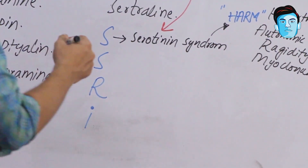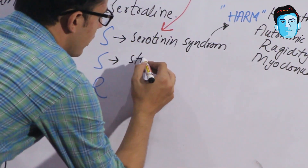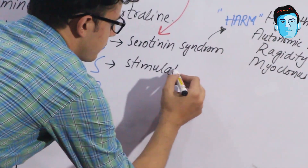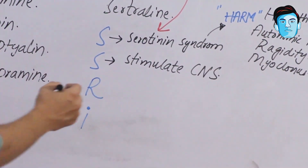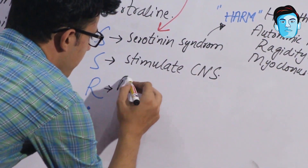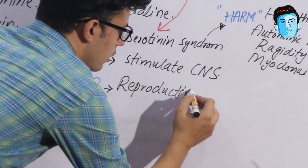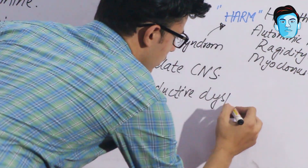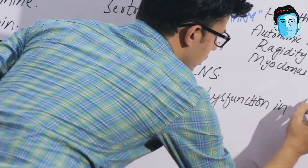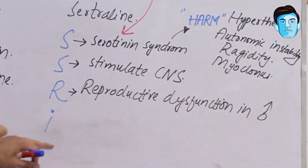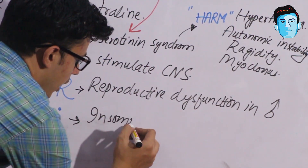The second S stands for stimulation of the CNS. R stands for reproductive dysfunction in males. I stands for insomnia. So the side effects of SSRIs are: serotonin syndrome, CNS stimulation, reproductive dysfunction, and insomnia.